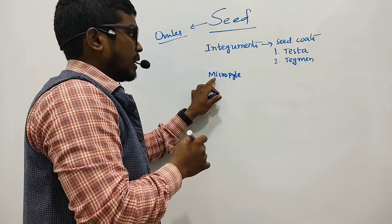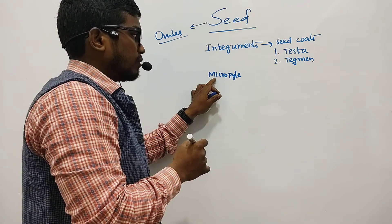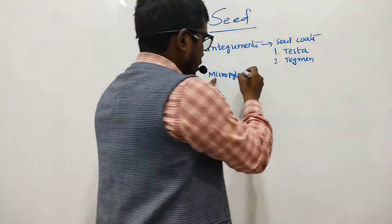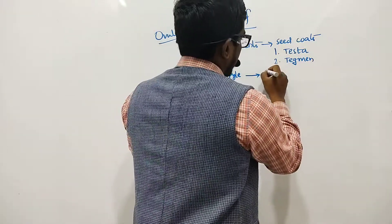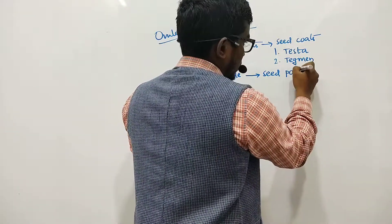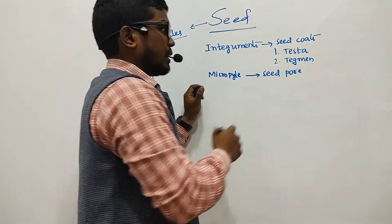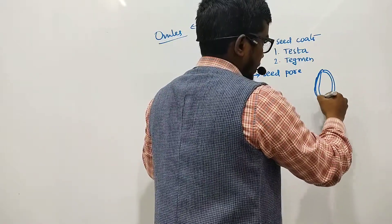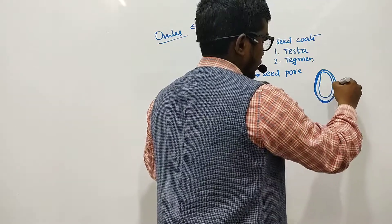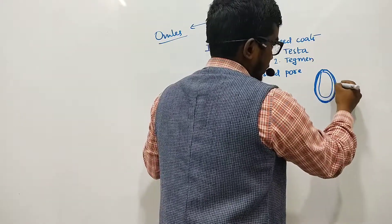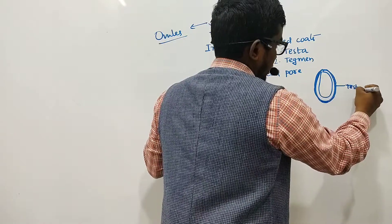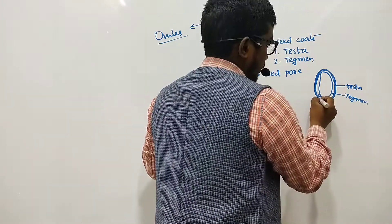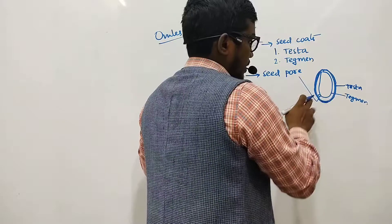The micropyle, a pore present in the ovule through which the pollen tube passes during fertilization, forms the seed pore — a small pore left over in the seed. So we have the thick leathery testa, the tegmen, and this small seed pore derived from the micropyle.